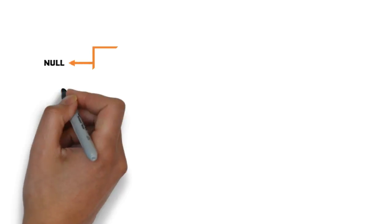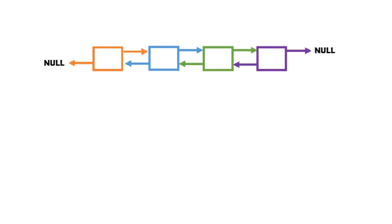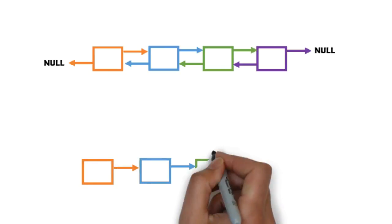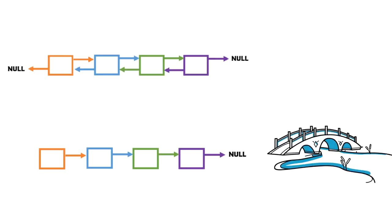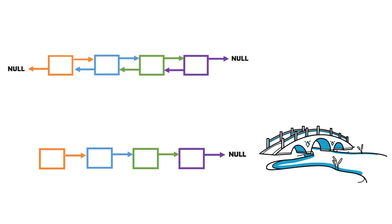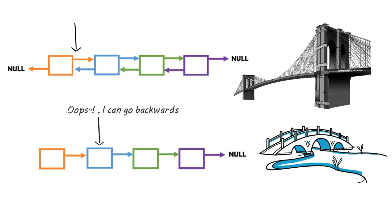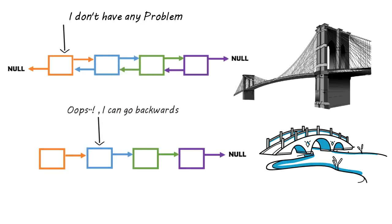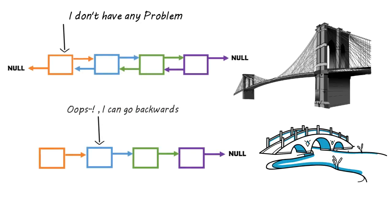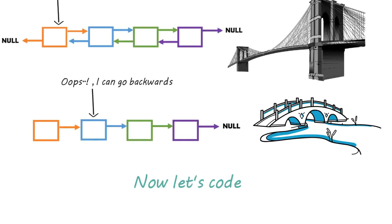A doubly linked list looks something like this. This is our singly linked list. A singly linked list is like a one-way bridge — you can't go back. A doubly linked list is like a two-way bridge. We can move to the next node as well as go back to the previous one. I hope now you've understood the concept of a doubly linked list.